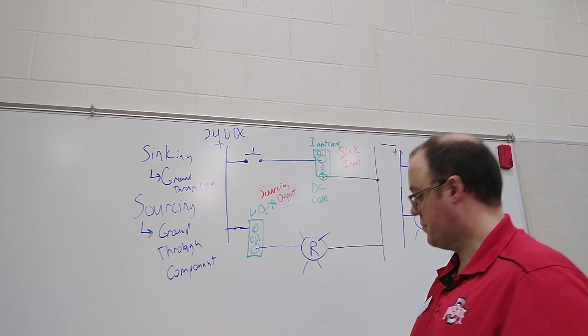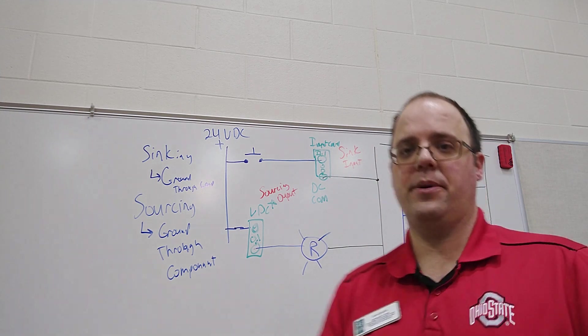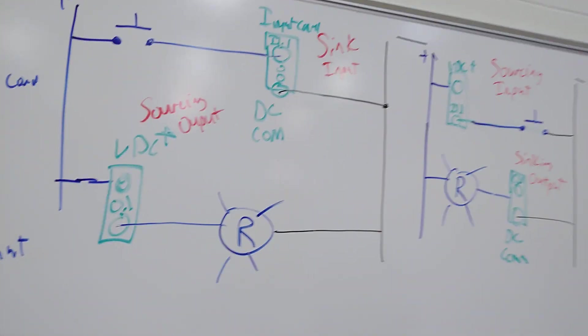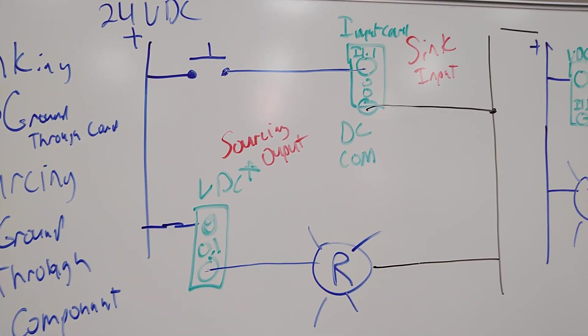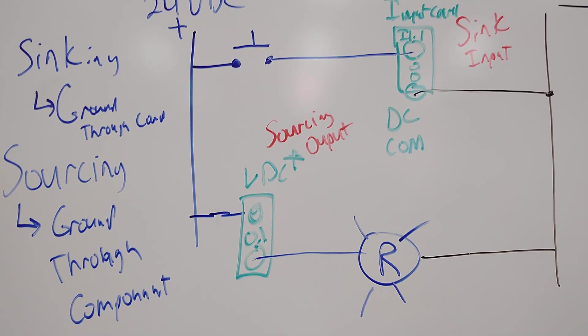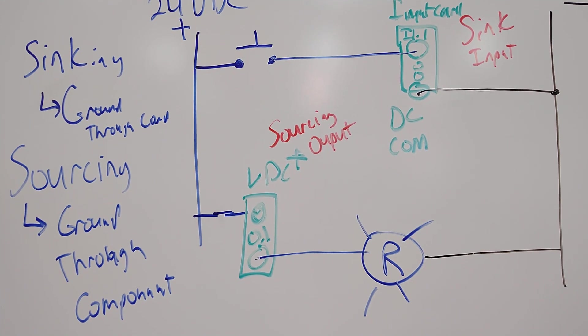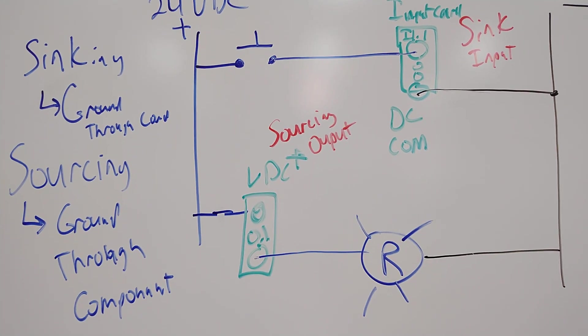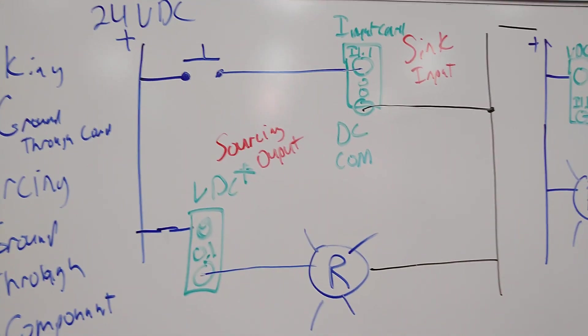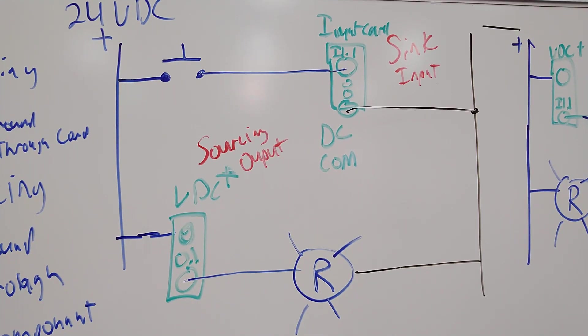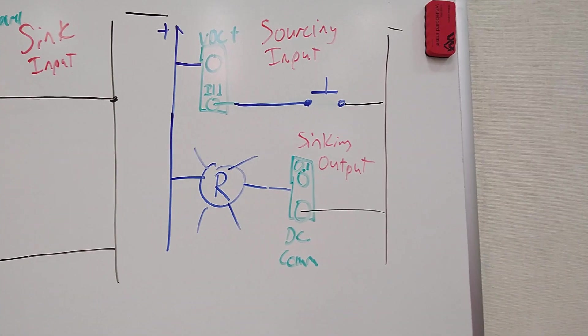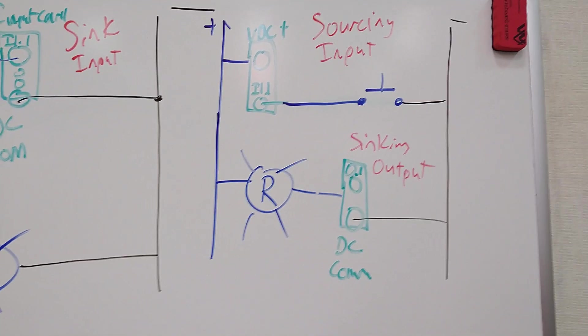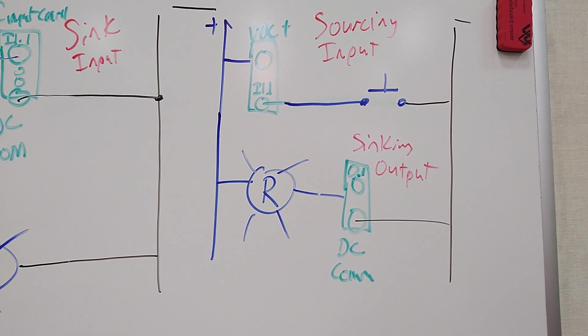So let me zoom in, let me help you zoom in on this a little bit so you can get a better look. And this will be what I'm trying to leave. So you know sinking means ground through the card, sourcing means ground through the component. And you should be able to get a better look at how the wiring diagram looks on a sinking input card or a sourcing input card, or a sinking output or a sourcing output.